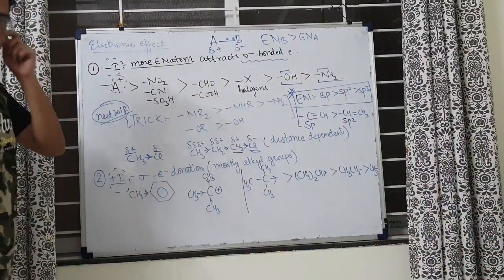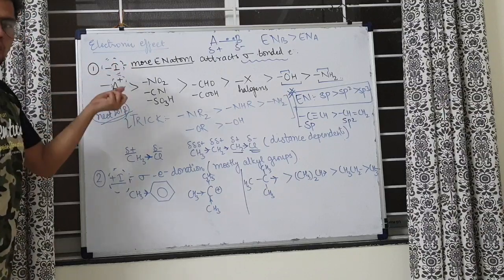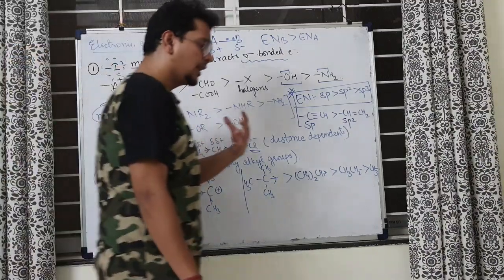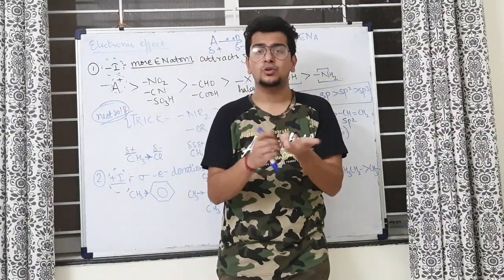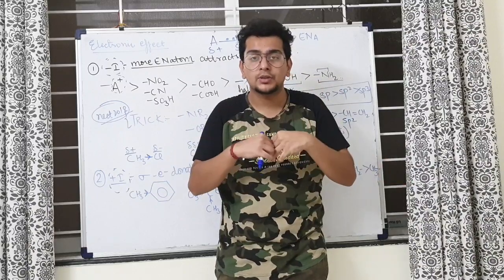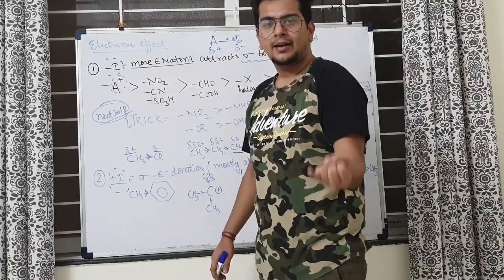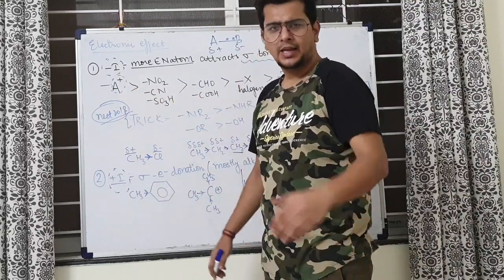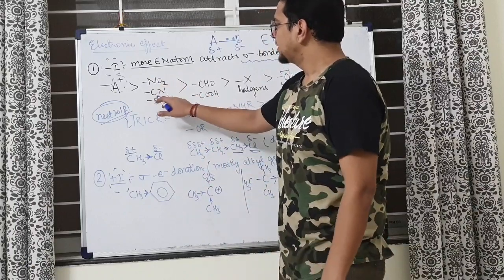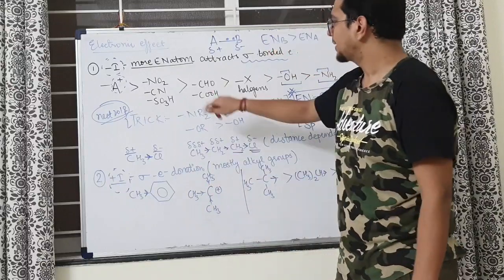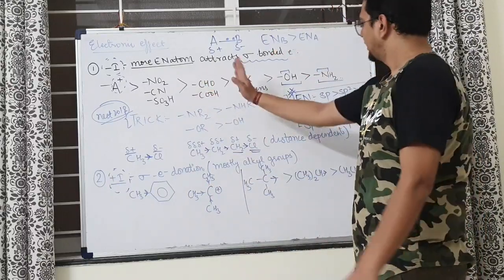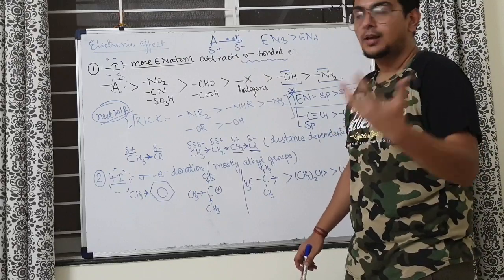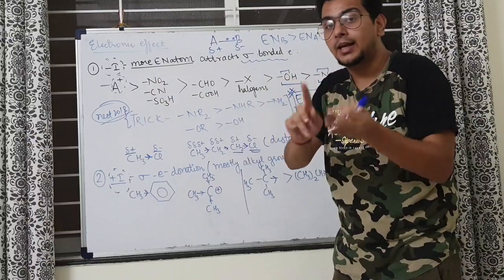-I is the attraction of sigma bonded electrons toward more electronegativity. How to remember the order? Simple - if I'm positively charged, I'll attract electrons. So A+ groups like NR3+, SR2+ have the most -I effect, then NO2, CN, SO3H, then carbonyls like CHO, COOH and derivatives. Then all the halogens - within halogens, fluorine > chlorine > bromine > iodine.